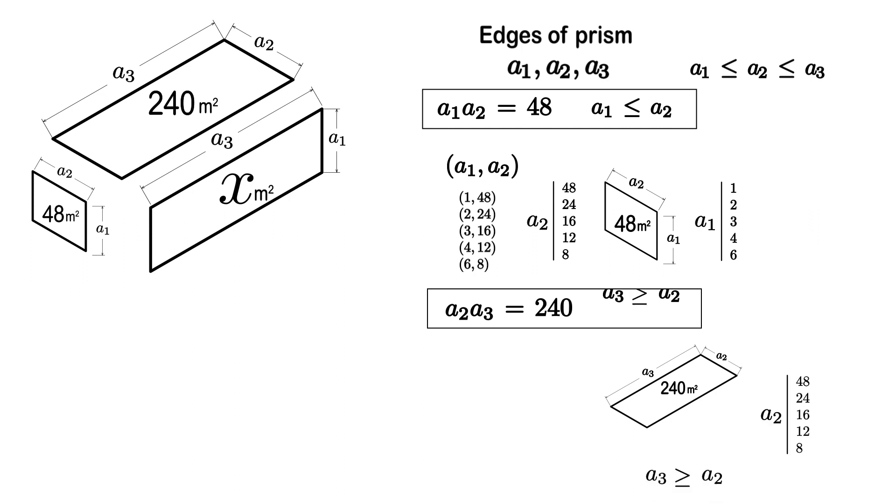Likewise, as the edge a3 is greater than a2, then a3 will be just equal to 20 and 30. Ok next, a2 will be 12 or 8. From this, a1 will be easily calculated as follows.